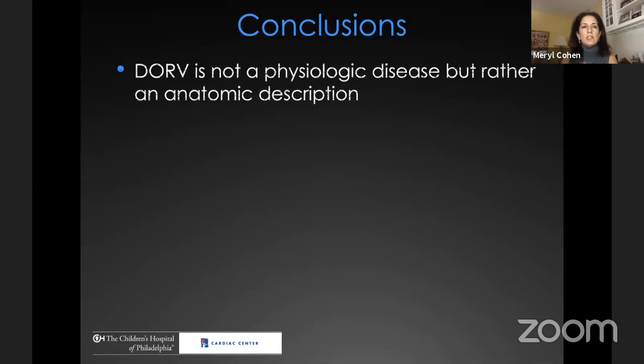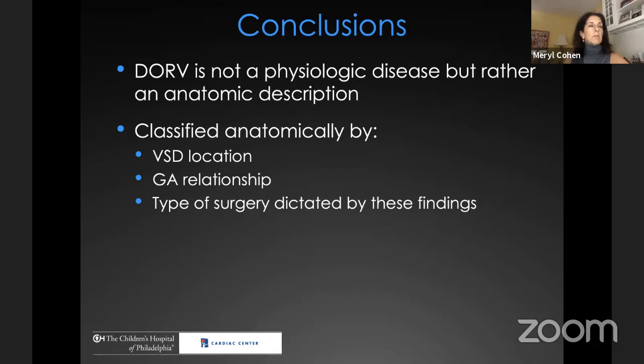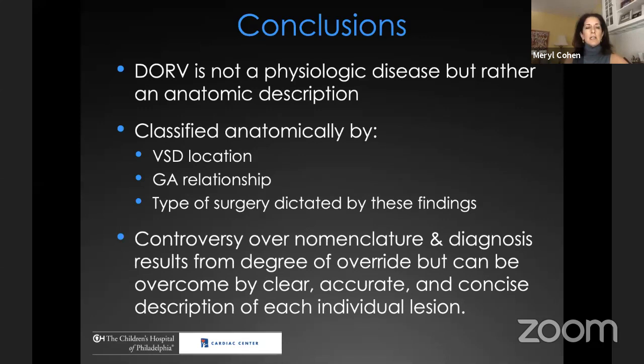In conclusion: DORV is not a physiologic disease but rather an anatomic description. It is classified anatomically by VSD location and great artery relationship, and the type of surgery is dictated by these findings. There remains tremendous controversy over nomenclature and diagnosis, resulting from the degree of override, but it can be overcome by clear, accurate, and concise description of each individual lesion. Thank you very much.